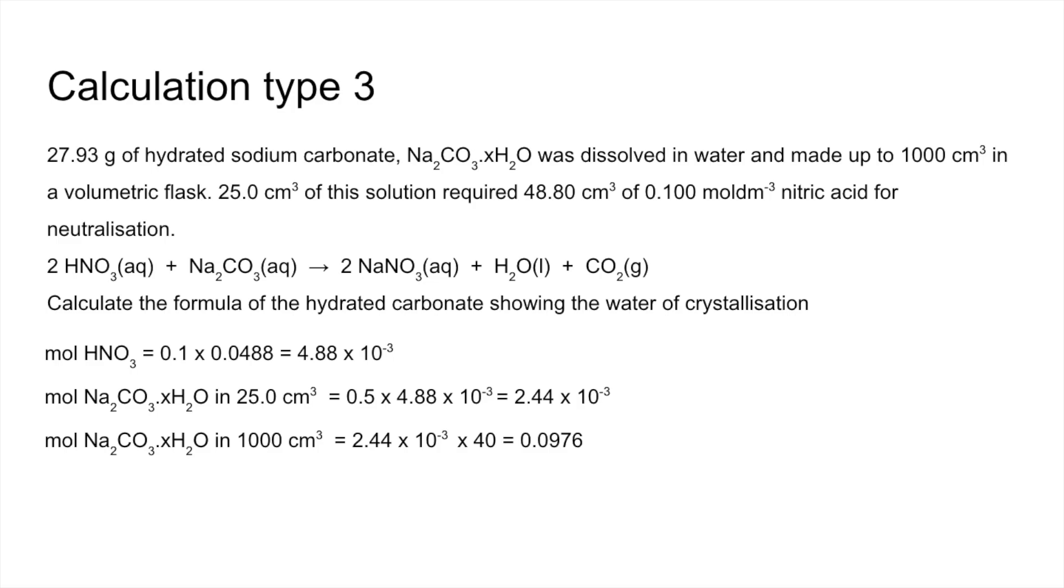So the MR is therefore the mass, 27.93, over those moles. That comes out at 286.2. A little bit like what we did before, we subtract from that what we know about the formula. So Na₂CO₃ can come off, that's got a mass of 106. So the X waters come out at 180.2. And each water molecule has an MR of 18, and so therefore there must be 10 waters in this salt. So it's Na₂CO₃·10H₂O.